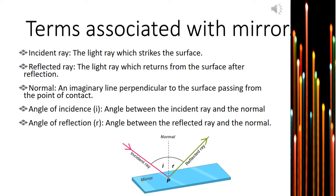You can see the point P, which is called the point of incidence. It is the point at which the incident ray falls on the mirror or the reflecting surface.